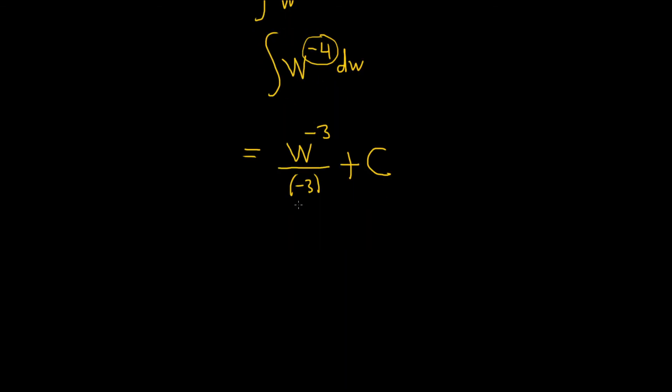All right, we could probably stop here, but it's a bit sloppy. Let's write it as follows. So it's negative 1 third times W to the negative 3 plus C. It looks a little bit better that way.